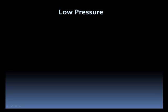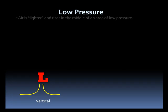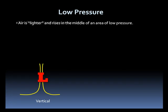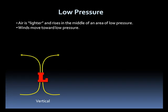Low pressure is represented by a red L on weather maps. Air is drawn into the area of low pressure and then rises in the center of the low, exiting aloft. In the horizontal, we see the air moving into the low.